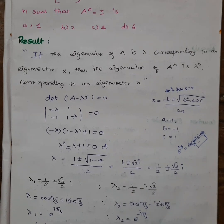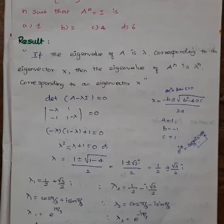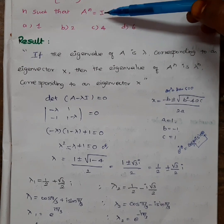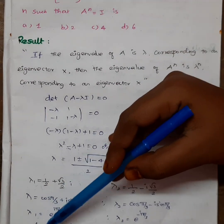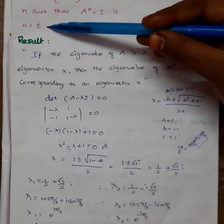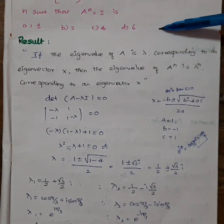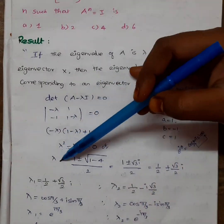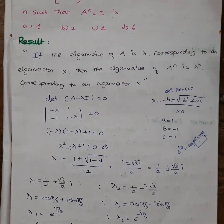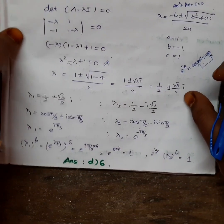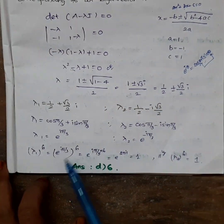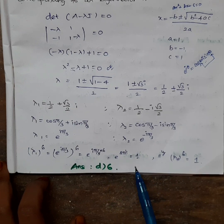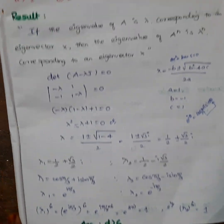In lambda^n, we need the value to equal 1. A^n equals I means lambda^n equals 1. There are 4 answer options: 1, 2, 4, 6. Applying n=1: gives 0; n=2: no; n=4: no. Applying n=6 gives 1. So the answer is 6.